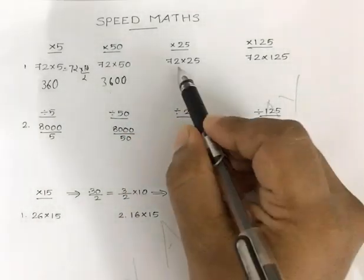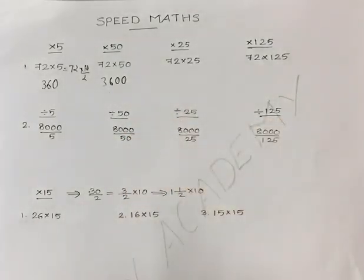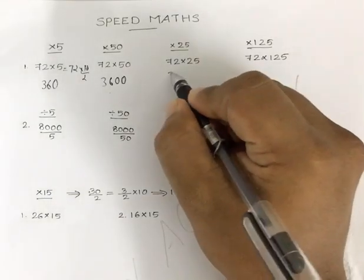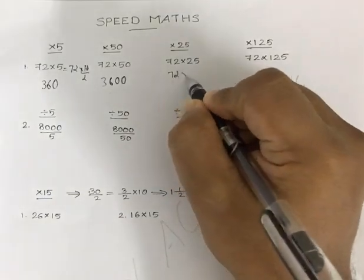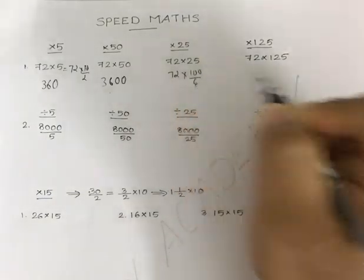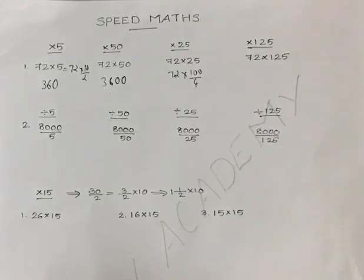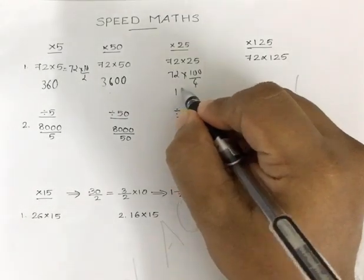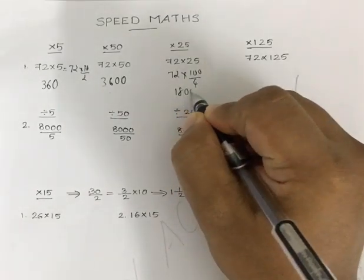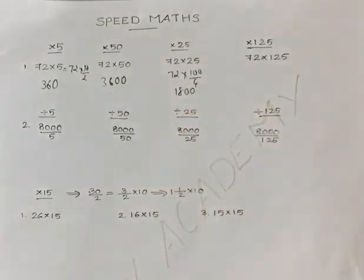Similarly, 72 into 25 — it is 72 into 100 by 4. So you take one-fourth of the number, which is 18, followed by two zeros. The answer is 1800.